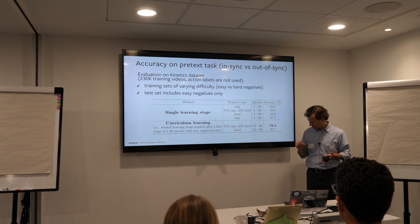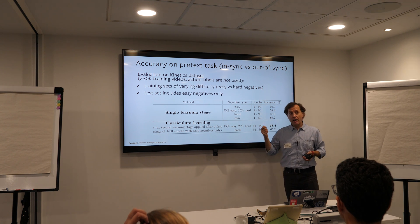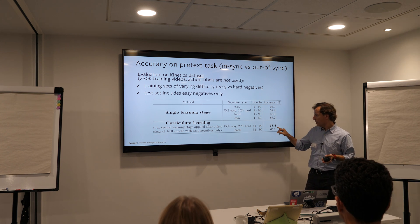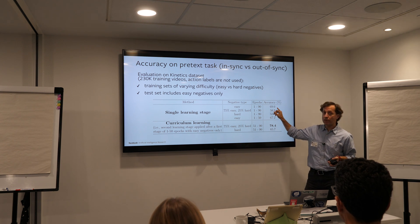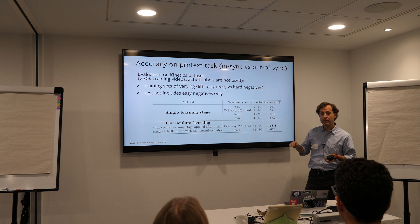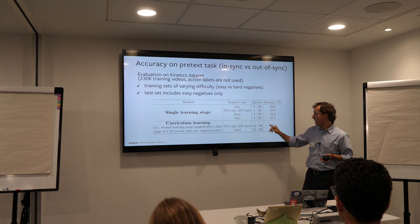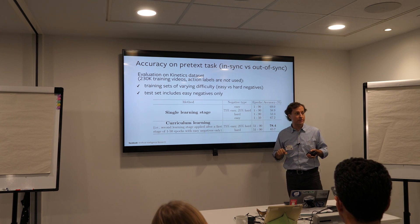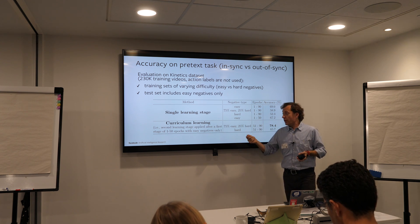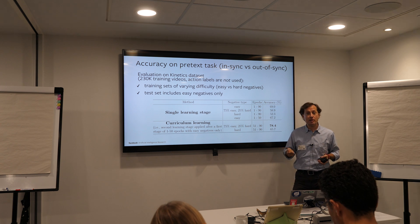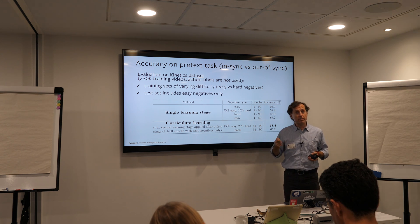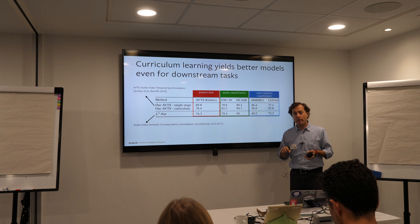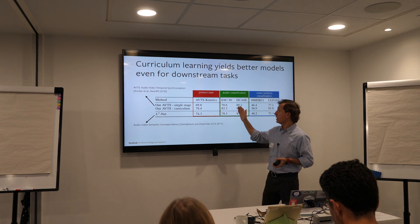Here is a remarkable result: if you inject hard negatives in a second stage of learning — after having first trained on only easy negatives — the model improves by 9% over the one trained on easy negatives alone. This is remarkable because the test set includes only easy negatives. We trained for the same total number of epochs; for the first 50 epochs we use only easy negatives. This suggests that injecting hard negatives from the very beginning makes optimization too hard, but injecting them halfway forces the model to become more general. This curriculum learning policy also generalizes to downstream tasks.